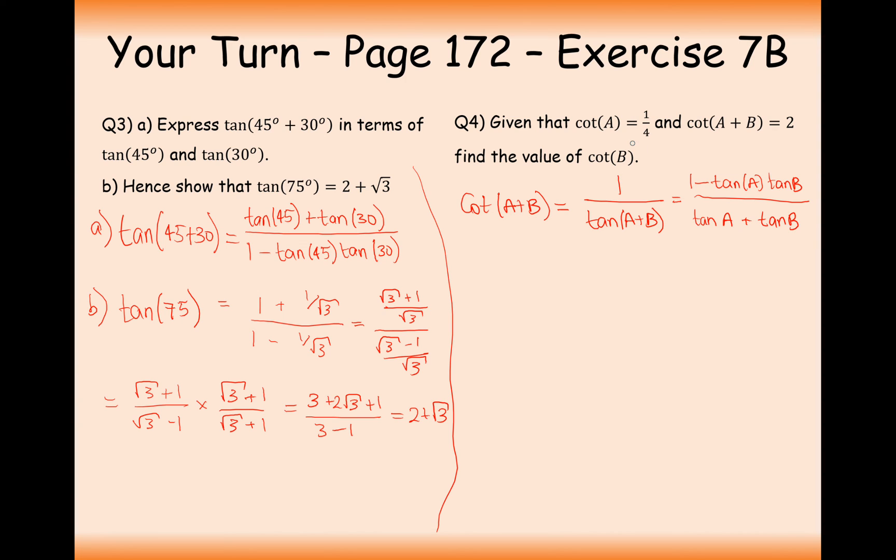So given that cot A is equal to a quarter, therefore we know that tan A is 4. And we know that cot A plus B is 2. Now I've written cot A plus B correctly here so I'm going to leave that alone. That's 2 equals and then it's going to be 1 minus 4 tan B all over 4 plus tan B.